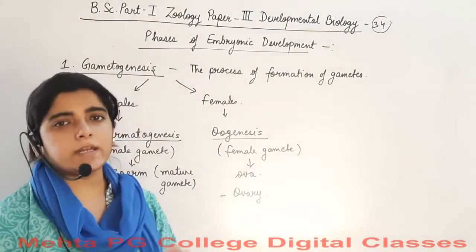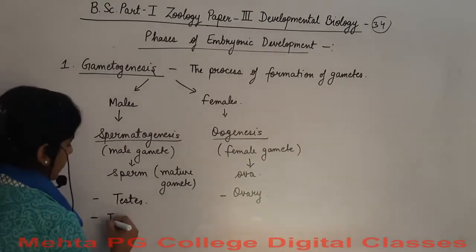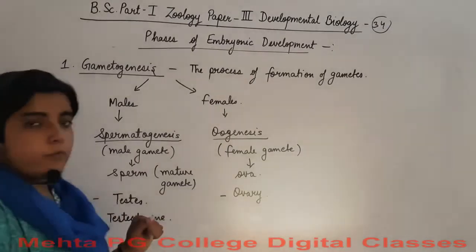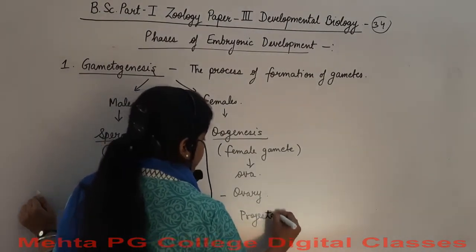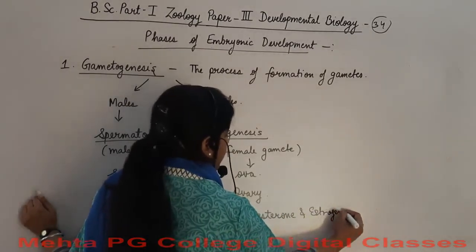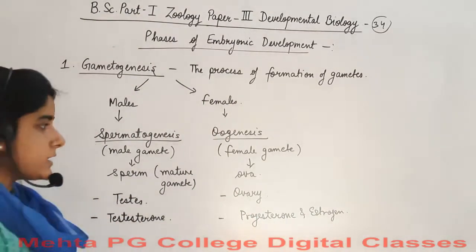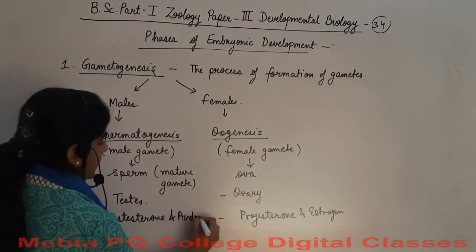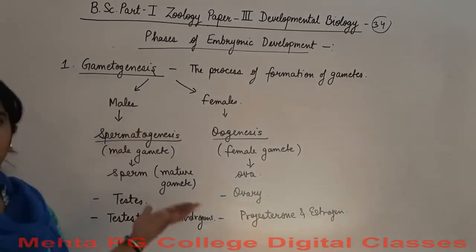Hormones regulate this process. When we say spermatogenesis, in males only one hormone is present, that is testosterone. But in females we have two hormones which regulate the process: progesterone and estrogen. Female processes are a little more complicated. Sometimes androgens are mentioned for males as well, but they are not much preferred to say. So gametogenesis is the process we know.